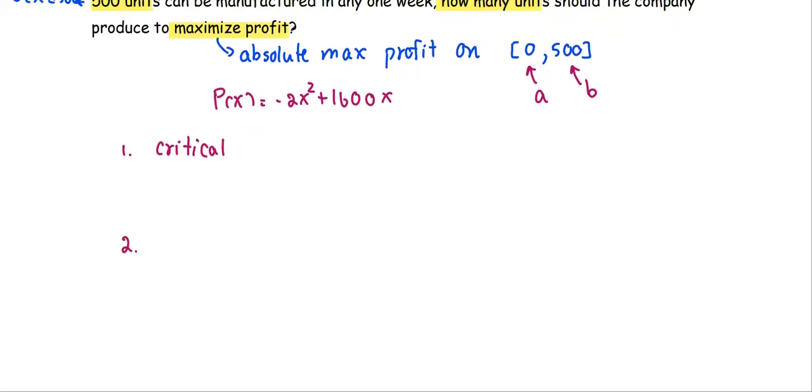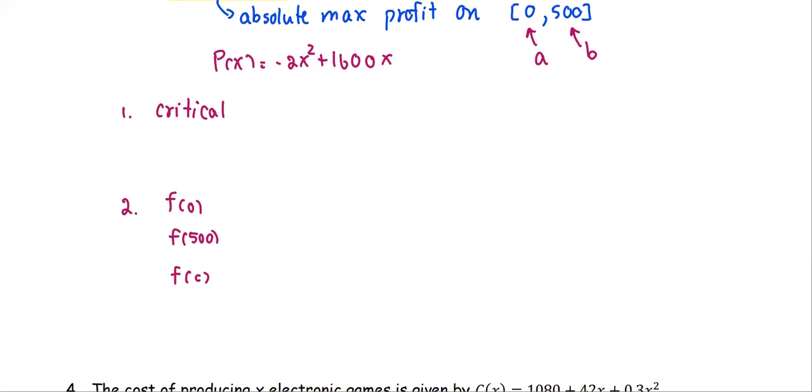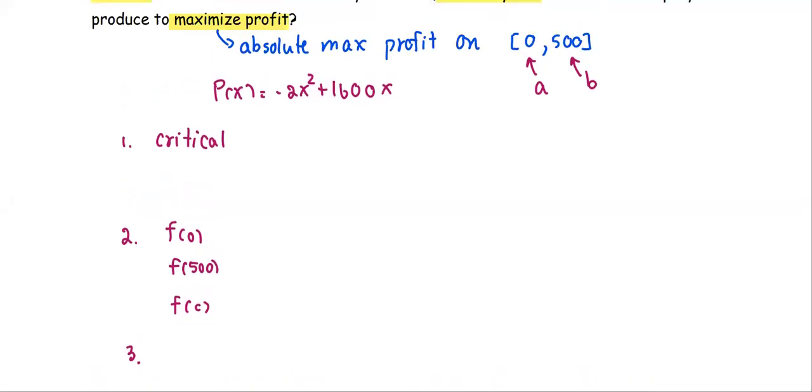Step 2, we are going to compute the function value at the left end, at the right end, and at the critical value c that we find from step 1. In the last step, we're going to see what is the largest and what is the lowest to give us the absolute max and absolute min.